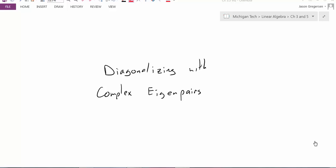Hello everyone, my name is Jason Gregerson. In the previous videos, we've talked about how we can take a matrix A and we can find the eigenvalues and eigenvectors of that matrix. And in some cases, we can write a diagonal representation for this.